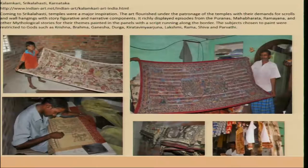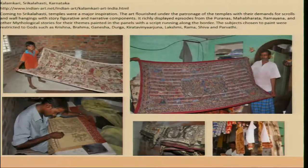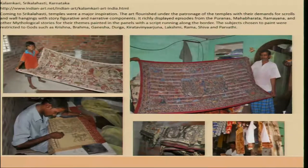Coming to Sri Kalahasti temple, which was the major inspiration for this kind of painting, the subjects chosen to paint were restricted to gods and goddesses such as Krishna, Brahma, Ganesha, Durga, Kirata Arjuna, Lakshmi, Rama, Shiva, and Parvati. Kalamkari is a tradition where a practitioner paints with a kalam or pen made out of a stick, which holds a lot of ink at a time and flows freely. They paint stories and illustrations on cloth with a flowing linear pattern. Seen in the picture is a complete Ramayana done on cloth by the artist Nagarjun.